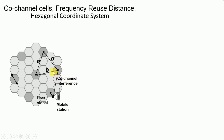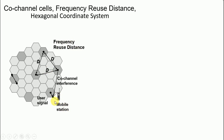We also have a metric that separates base stations using a similar set of frequencies. If this cell uses F1 and adjacent cells use F2, F3, F4, then F1 appears again at a distant cell. The distance between these two same-frequency cells is termed D, the frequency reuse distance. So we have a mobile station, its intended signal, co-channel interference from other cells using the same frequency band, and the frequency reuse distance D.